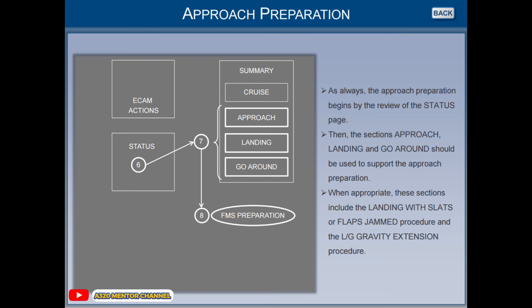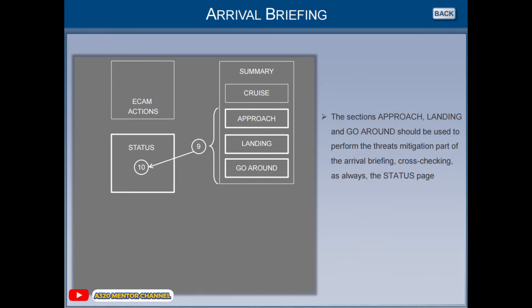When appropriate, these sections include the landing with slats or flaps jammed procedure and the landing gear gravity extension procedure. The sections on approach, landing, and go-around should be used to perform the threats mitigation part of the arrival briefing, cross-checking, as always, the status page.